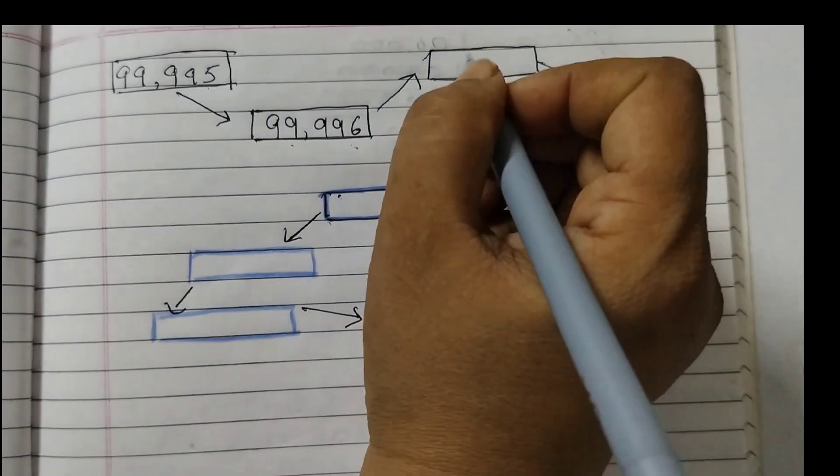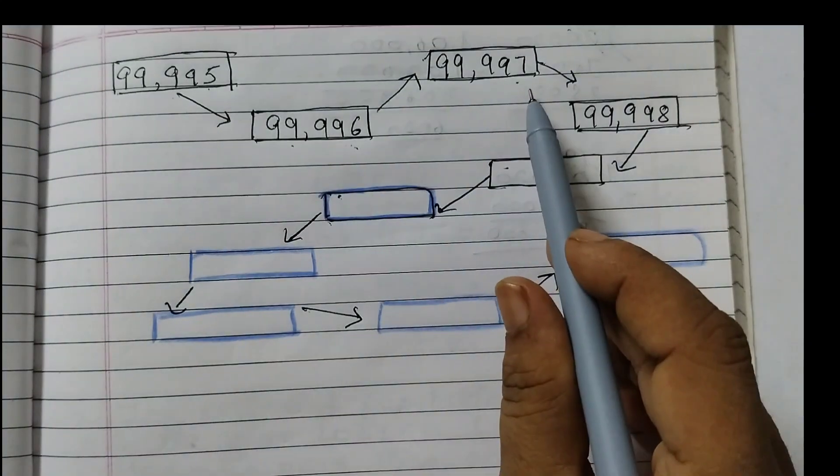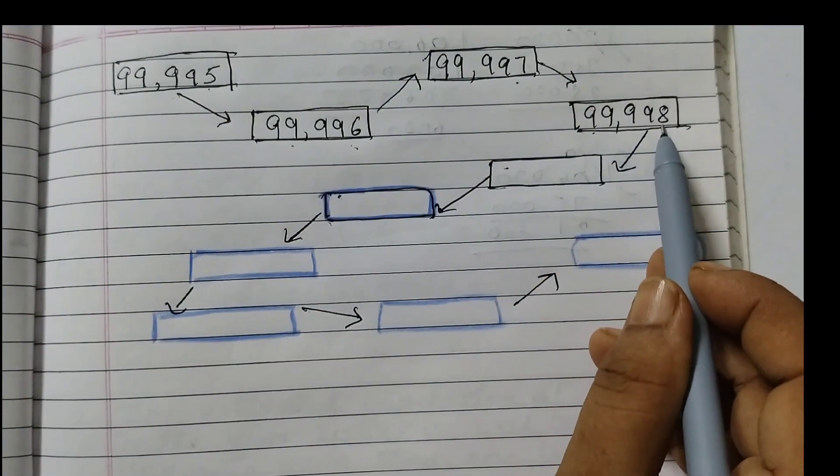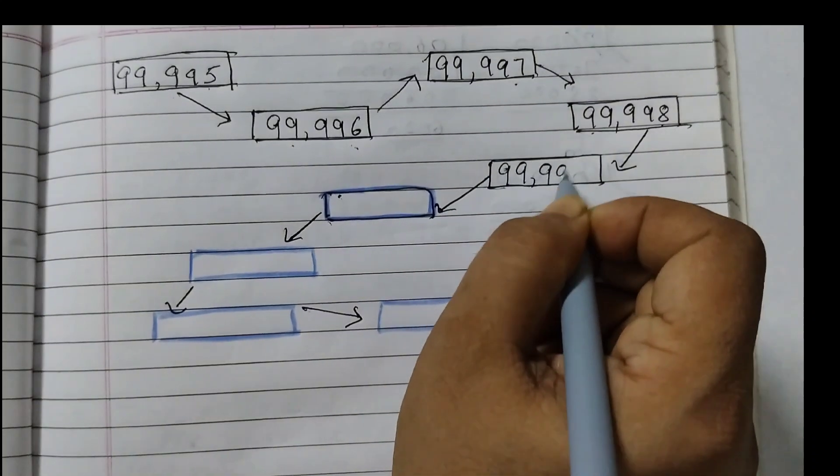Add 1 to this, you would get 99,997. Add 1 to this, 99,998. Again we add 1. So we would get 99,999.